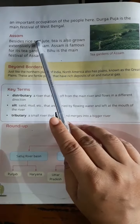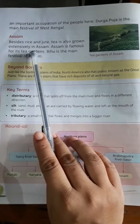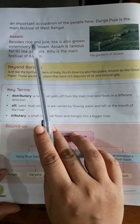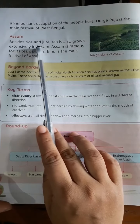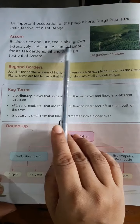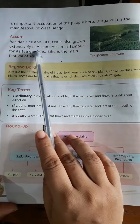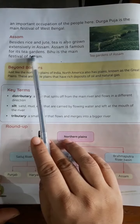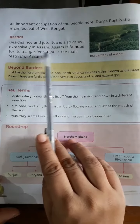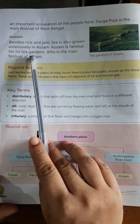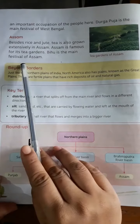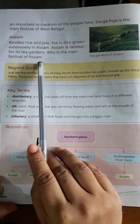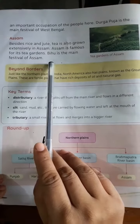In Assam, besides rice and jute, tea is also extensively grown. Assam is famous for its tea gardens. Bihu is the main festival of Assam. These are the Northern Plains, children.